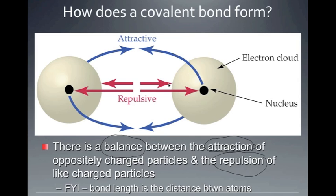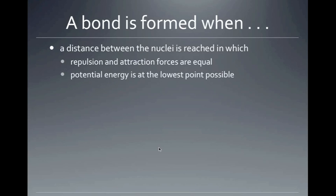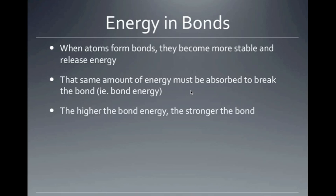Electrons are pulling the atoms in, the nucleus is pushing out, and we reach a balance between the attraction and the repulsion. The distance at which they are balanced — where the forces are equal — is the bond length, and that is when a covalent bond is formed. Potential energy is at its lowest point, at the bottom of that curve on the potential energy graph. When those atoms form bonds, they become more stable and release that energy.